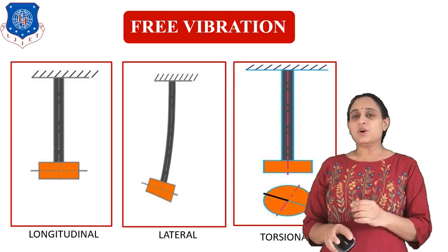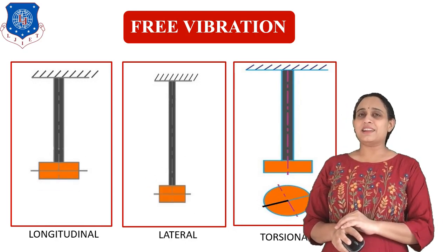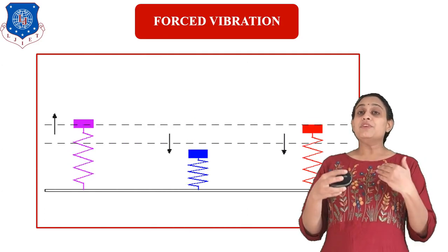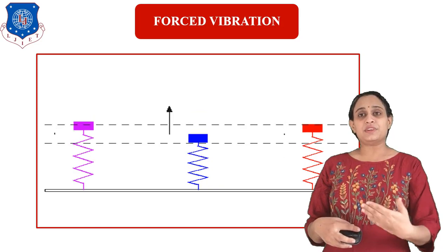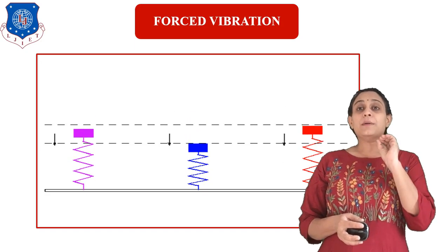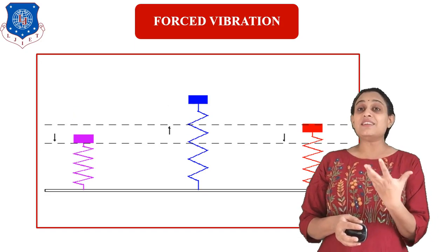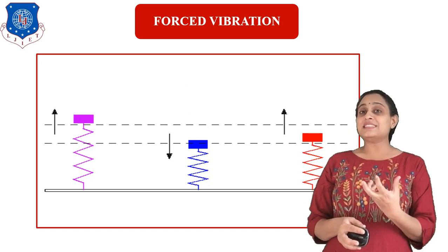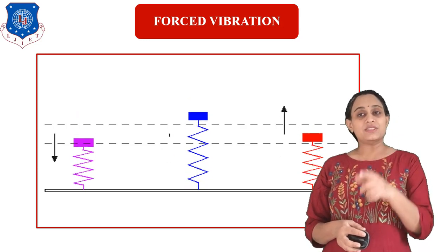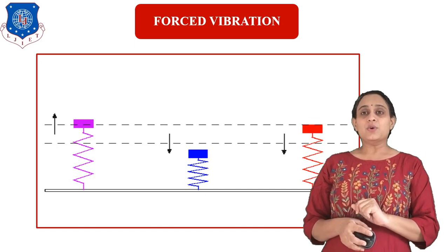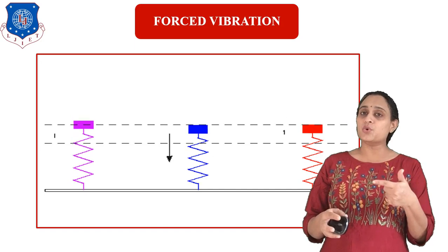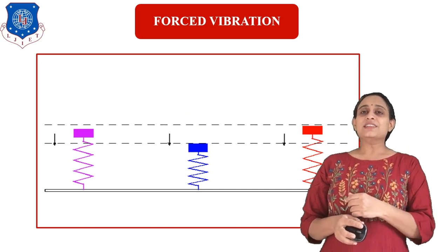The second topic is forced vibration. As seen in the diagram, forces need to be applied at equal intervals of time. Just like in an IC engine — at the point of power stroke generation, power is generated inside the system, a force is generated, and that force acts on the system. When force acts on the system in this repeated manner, the system undergoes forced vibration. In forced vibration, we have to apply force at equal intervals of time.